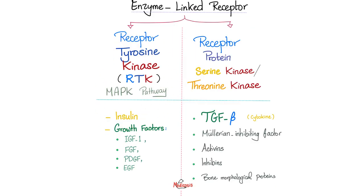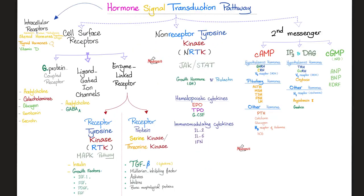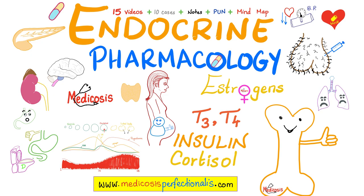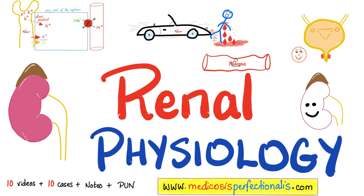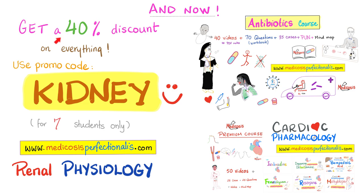In the next video, we'll talk about the insulin story - receptor tyrosine kinase. This receptor is like a strong, independent woman. Most of my videos are here on YouTube, but I have some premium content on my website, medicosisperfectionitis.com, such as this endocrine pharmacology course. Learn more about estrogen, progesterone, testosterone, T3 and T4, insulin, how to give insulin, how to calculate the insulin dose, and different types of insulin. Learn more about cortisol and all the others - in 15 videos plus cases, notes, a mind map, and the Perfectionaries Ultimate Notebook. You can download all of this at medicosisperfectionitis.com. I also have a kidney physiology course there. For a limited time, get a 40% discount using discount code KIDNEY.